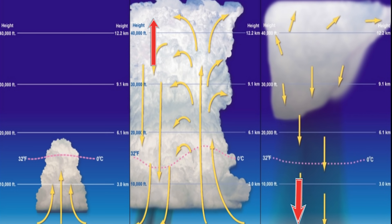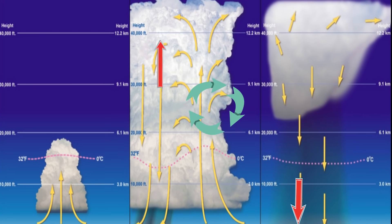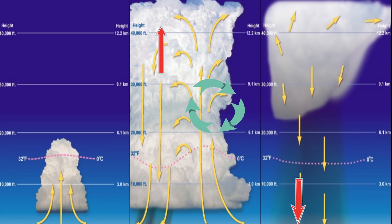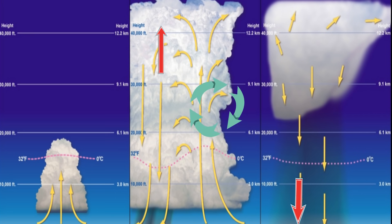As this cool air sinks, it pushes the warm air up. The cool air is eventually heated by the Earth's surface and begins to rise again. This cycle of warm air rising and cooling causes a circular movement of air called a convection current.